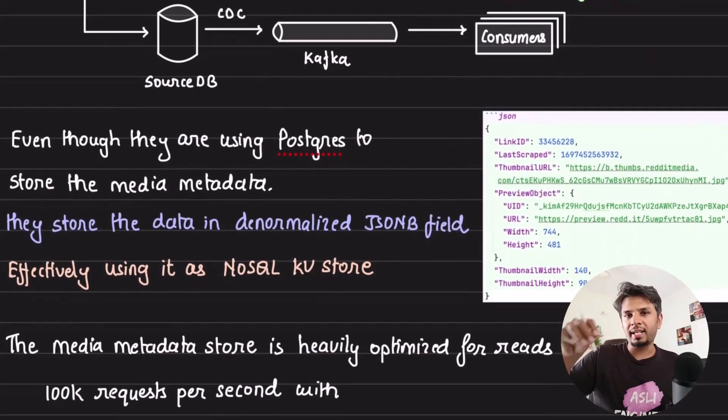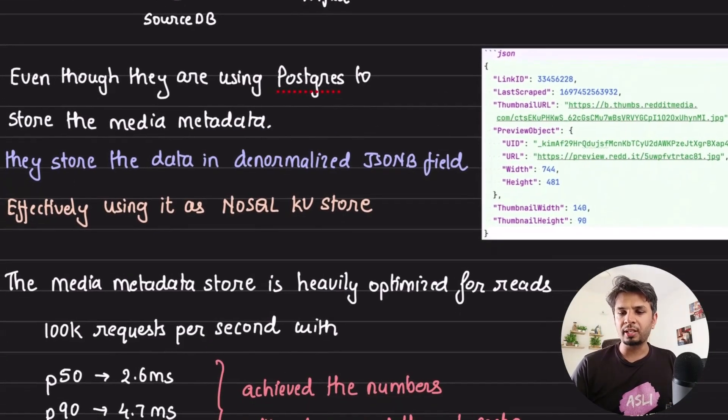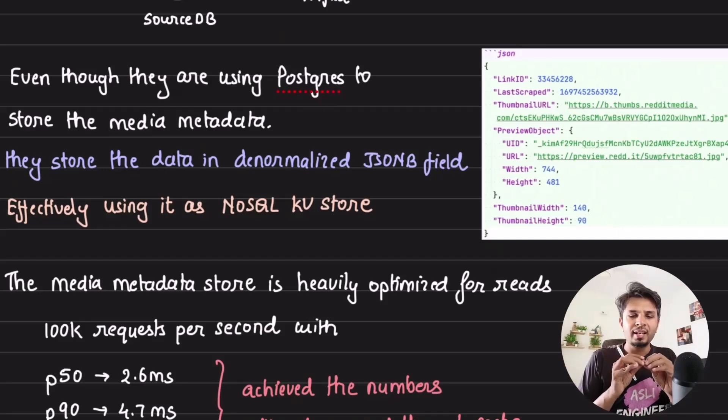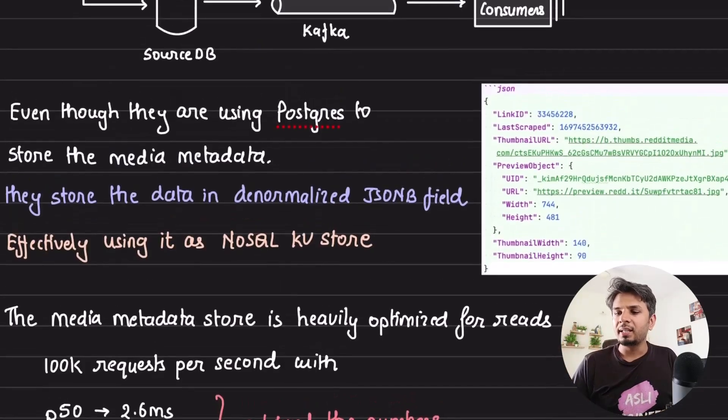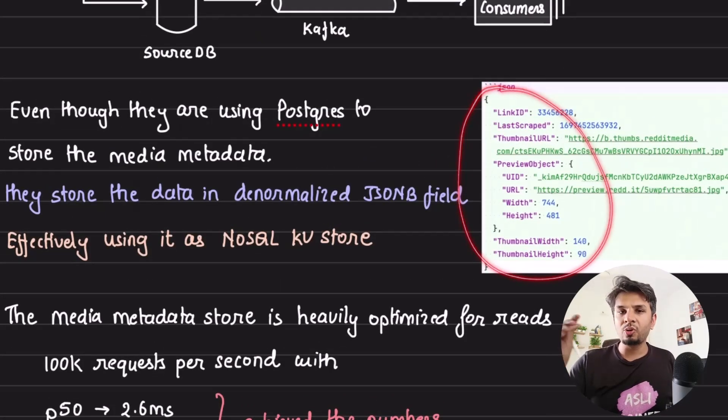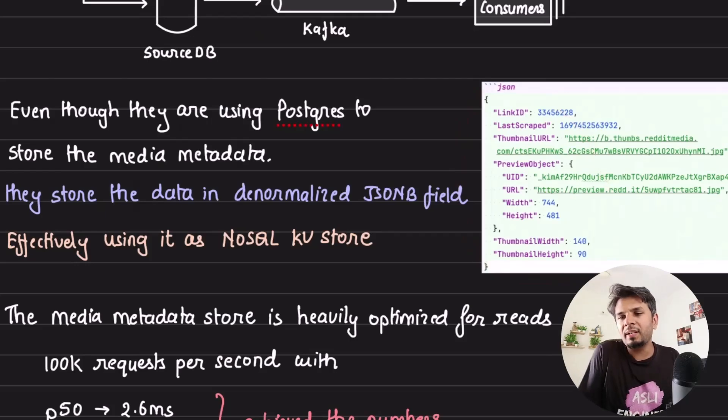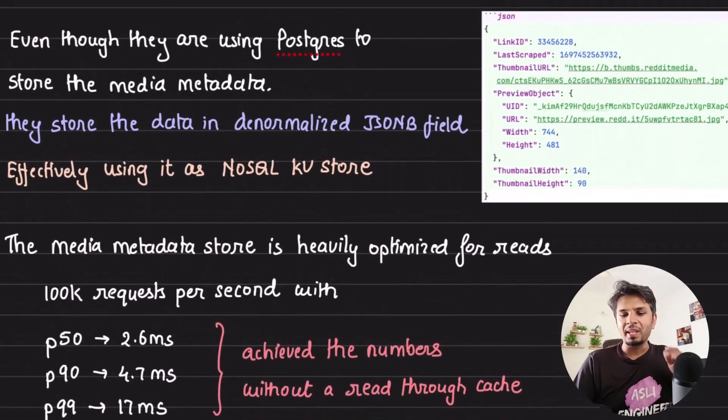How do they store the data in the database? Although they're using Postgres, it doesn't mean they store the data in terms of 3NF or complete normalization. What they did is they stored the data in a simple JSONB data type column, which means the entire metadata was stored as a JSON inside Postgres. They were effectively using Postgres as a NoSQL key-value store.